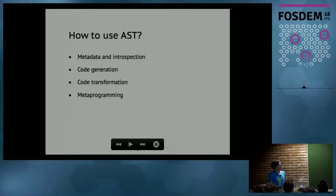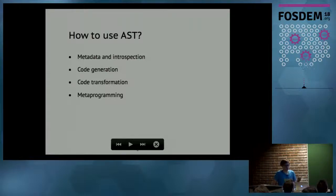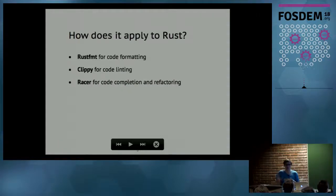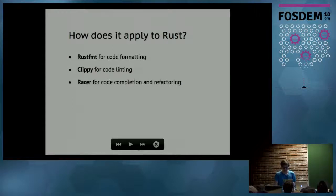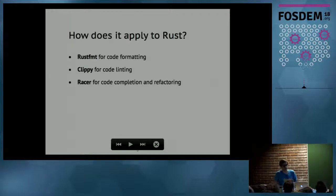You can also use ASTs to compile your code to a binary, but thankfully the Rust compiler does that part for us. The use cases are not limited to those listed — there are a lot more use cases, and they are basically limited only by your imagination. ASTs by themselves are a pretty abstract concept, so how do we actually apply them to Rust? In fact, multiple Rust libraries already apply that concept, and we use these tools every day.